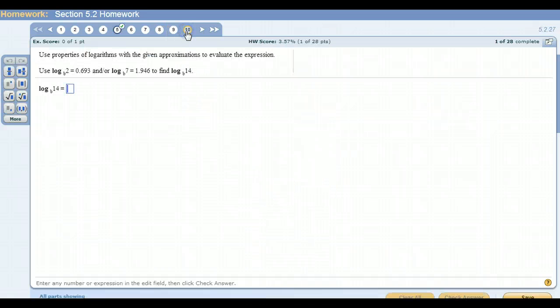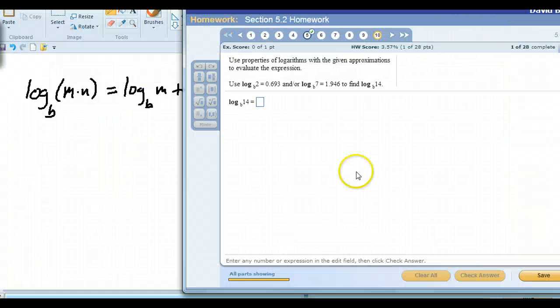All right, now jumping ahead, number 10, use property of logarithms with the given approximations to evaluate the expression. So with this problem, so they're giving me the log base b of 2 equals this. The log base b of 7 equals this.